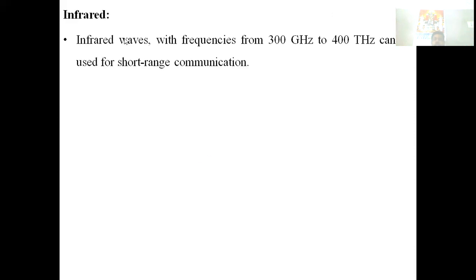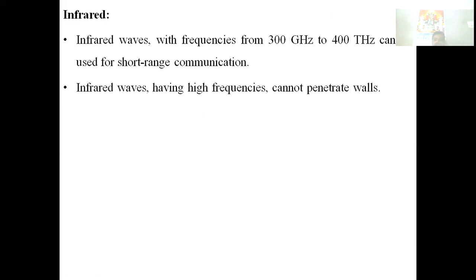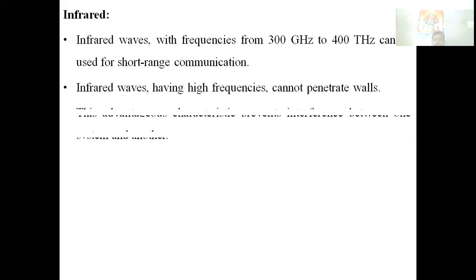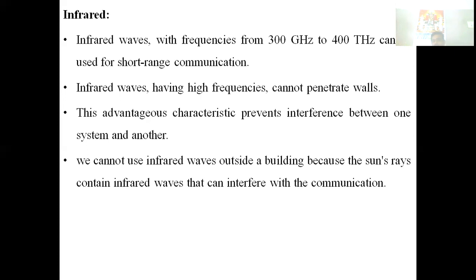Infrared waves with frequencies from 300 GHz to 400 THz are used for short-range communication. Infrared waves with high frequency cannot penetrate through walls, which prevents interference between systems. However, infrared cannot be used outside buildings because the sun's rays contain infrared waves that can interfere with communication.